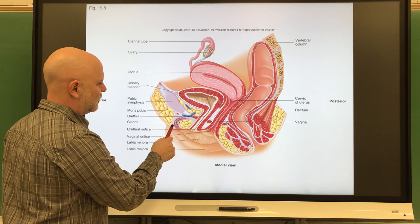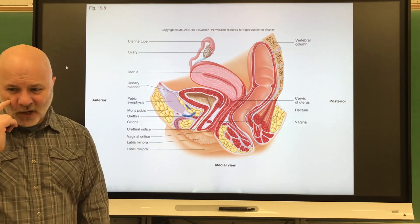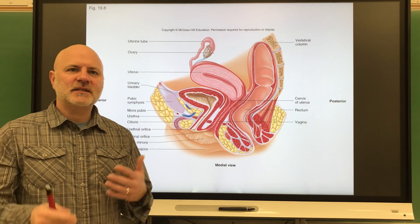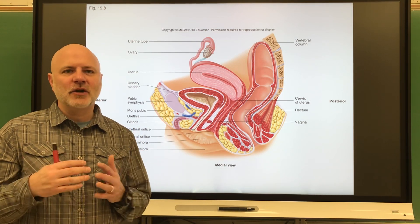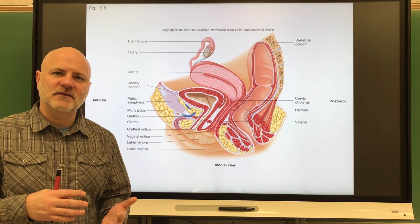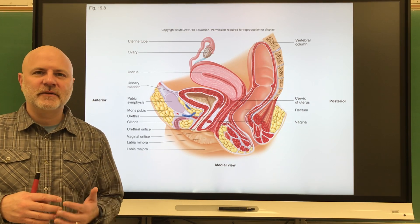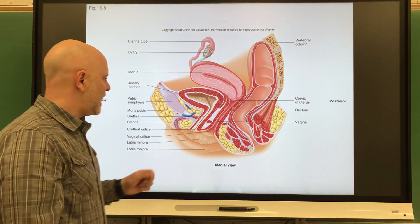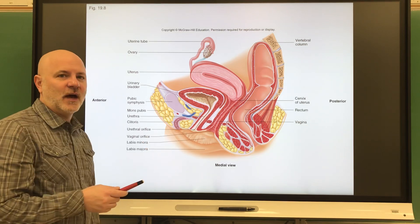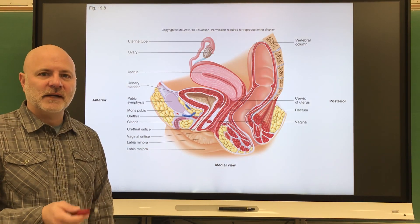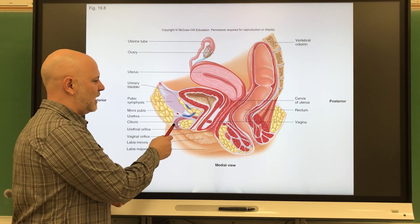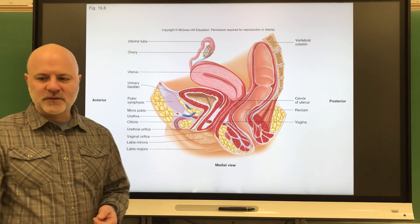Lastly, here is the clitoris — a small protruding structure composed of erectile tissue. It is highly innervated with lots of nerve endings and is very sensitive to stimulation, contributing to female sexual arousal. It is made of the same type of erectile tissue found in the glans penis and shares the same embryological organ origin; because of that, it will also become erect.